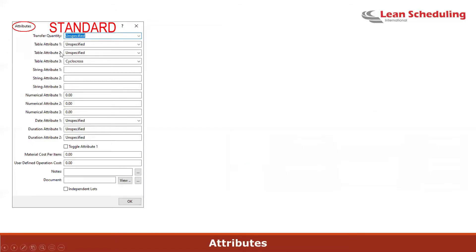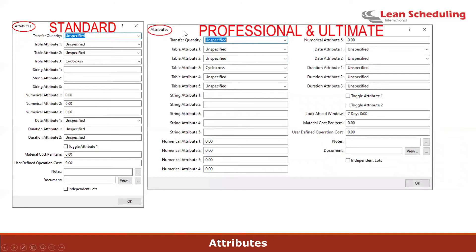Attributes in Op Center APS are used for scheduling, finding things, or colorizing items visually. In the Standard version, there are three attribute tables, three string attributes, some numerical ones, and dates and durations. The Professional and Ultimate versions increase these to five table attributes, five strings, five numericals, and so on — and with the Ultimate, you can add even more to these tables.